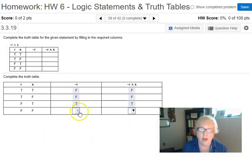Last row. The opposite of R - since R is false, the opposite would be true. Then I need not R and S. Not R is true, but S is false. Since they're not both true, this is false, being an and statement.